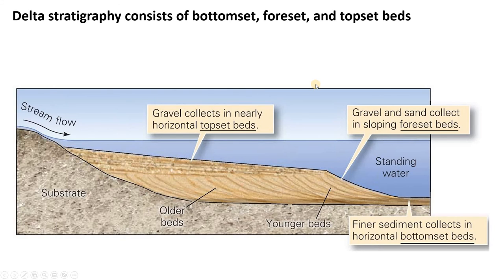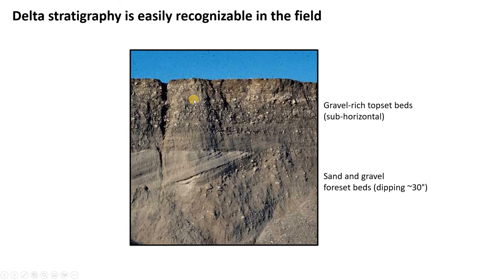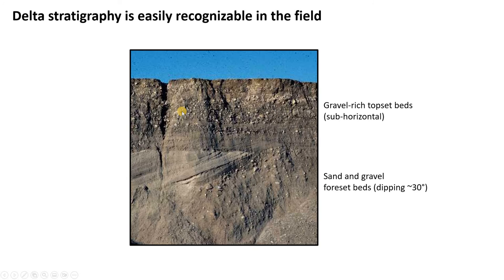Here's what these layers look like in cross-section in a small lake delta. The foreset beds are dipping about 30 degrees — in some places made of sand, in others chunkier gravel, perhaps from a flood event or a submarine gravity flow. There's a sharp contact where the dipping foreset beds are overlain by the horizontal, gravel-rich topset beds, essentially river deposits as the river migrated out across the top of the delta.